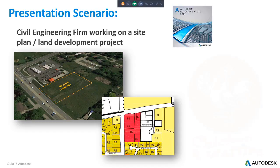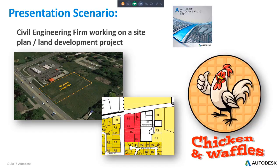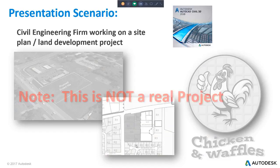So what is the commercial venture we'll be putting in? It's going to be a fast food restaurant called Chicken and Waffles. Autodesk Legal thought it would be a good idea to mention that this is not a real project — in the event you have a second or third cousin living adjacent to this site, we are not actually putting a fast food restaurant there.